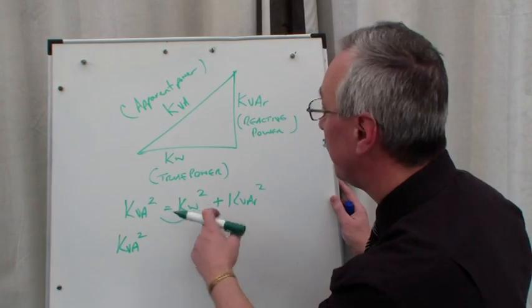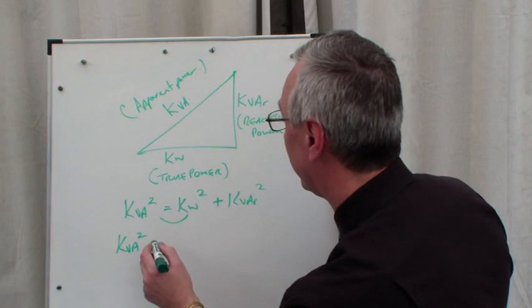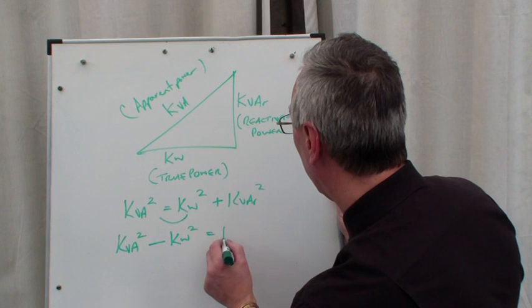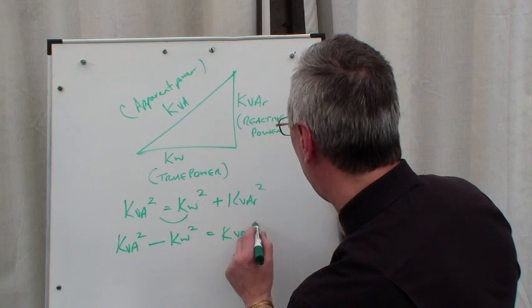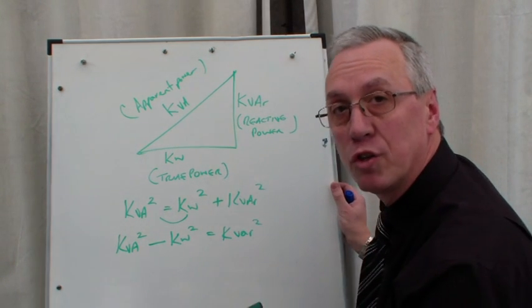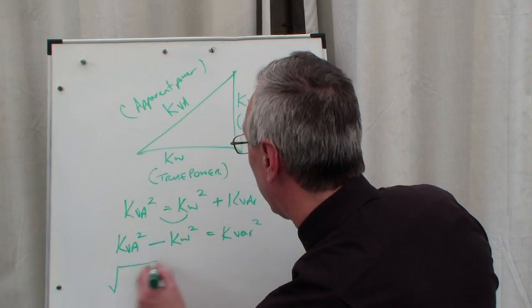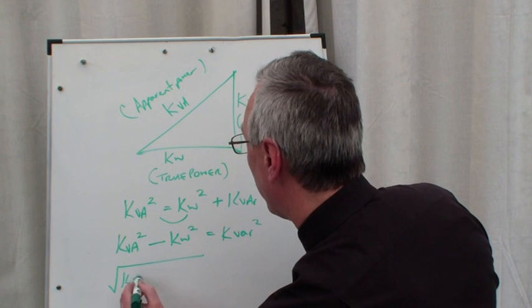kVA². All we have to do here is move the kilowatt sign across. It's a positive there, so it's going to become a negative. kVA² - kilowatts² = kVAR². Now it's just a simple matter of getting rid of the squared sign by crossing it over and making it a square root.